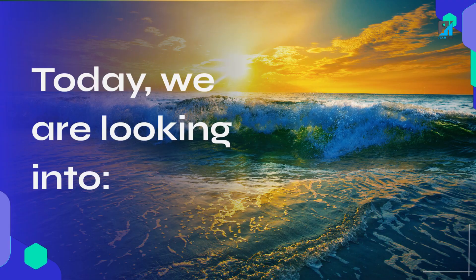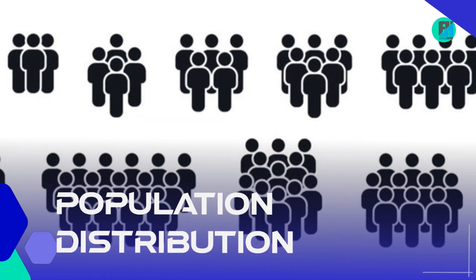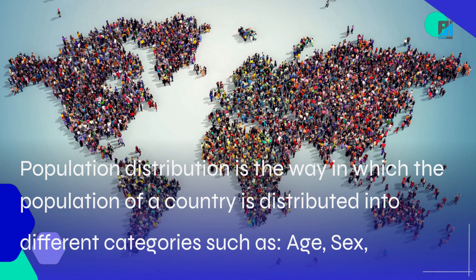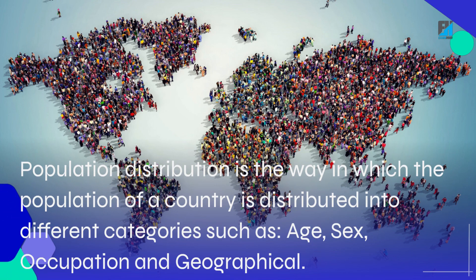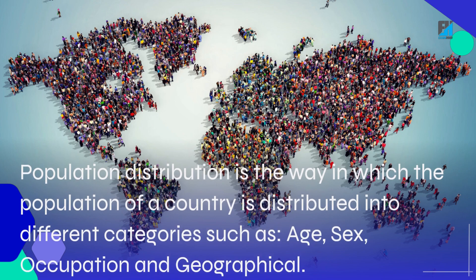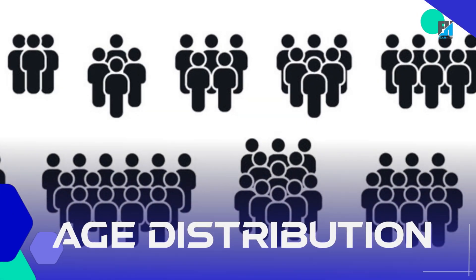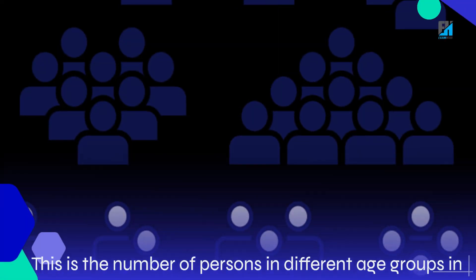Today we are looking into population distribution. Population distribution is the way in which the population of a country is distributed into different categories such as age, sex, occupation, and geographical area.